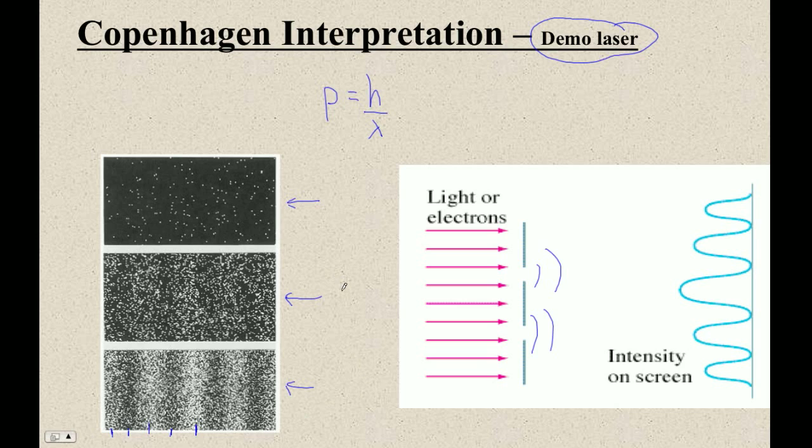And even more puzzlingly, if you sent them one at a time at exactly the same speed, separated by a year, they wouldn't make this pattern. They would follow this unpredictable pattern. It's like they would come in and they would hit somewhere on here.